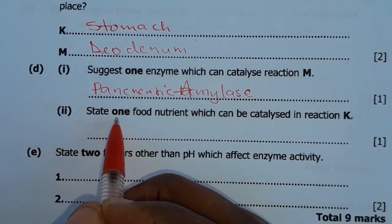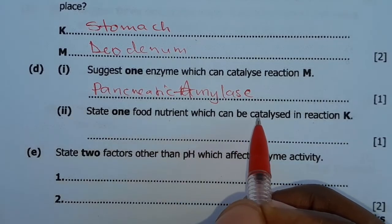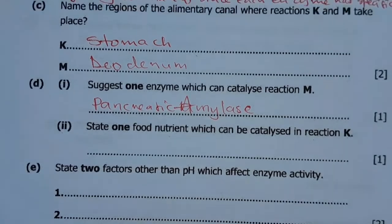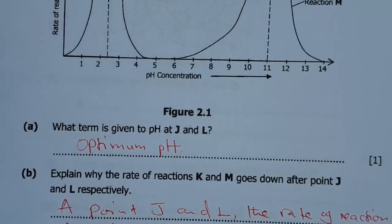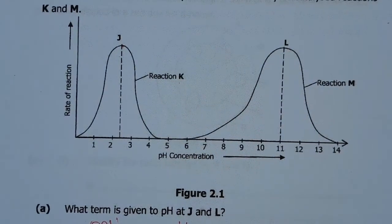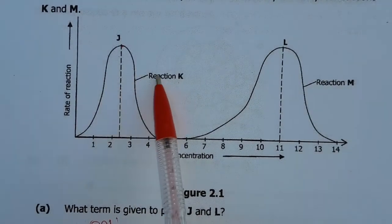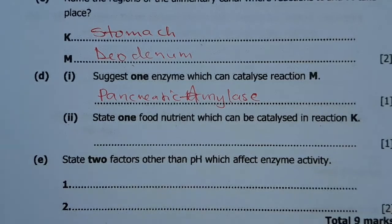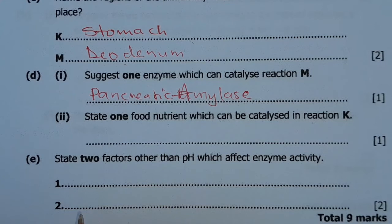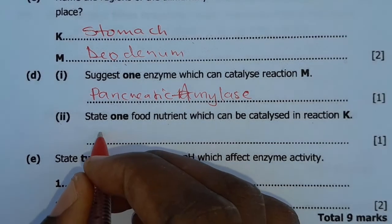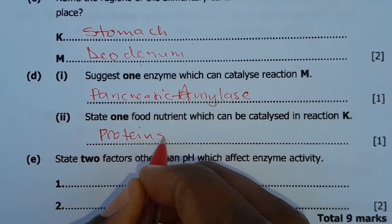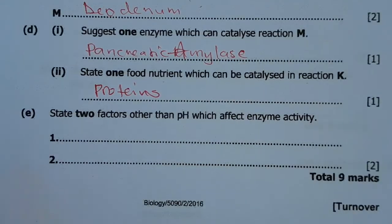Then the next question, part two, says state one food nutrient which can be catalyzed in reaction K. Reaction K, which is in the stomach. What food is broken down in reaction K, which is in the stomach? The food that can be broken down in the stomach, which is under acidic conditions, is the protein or the proteins.